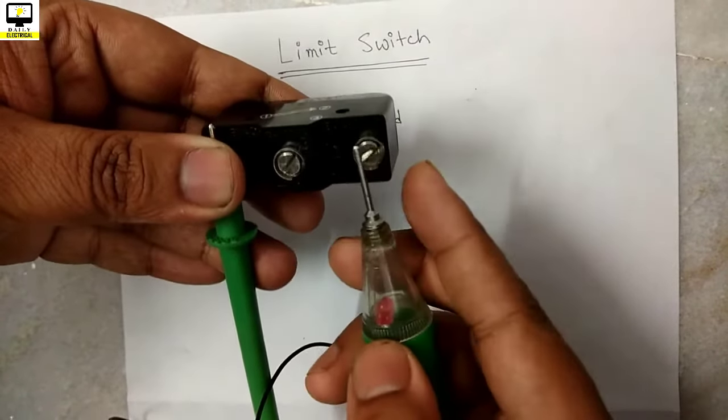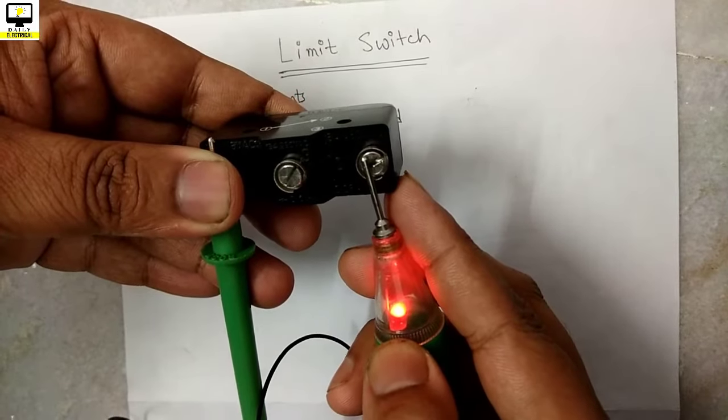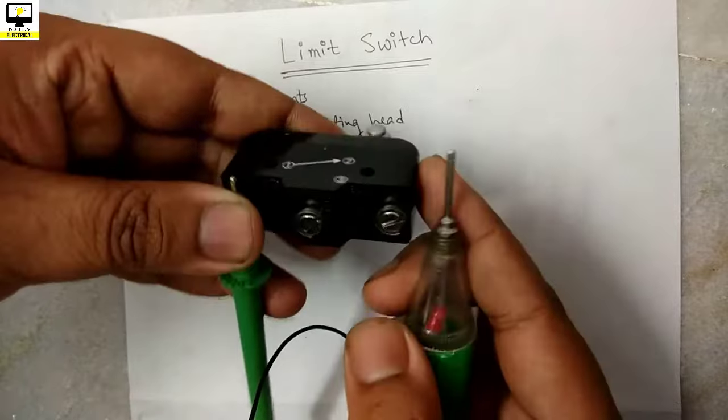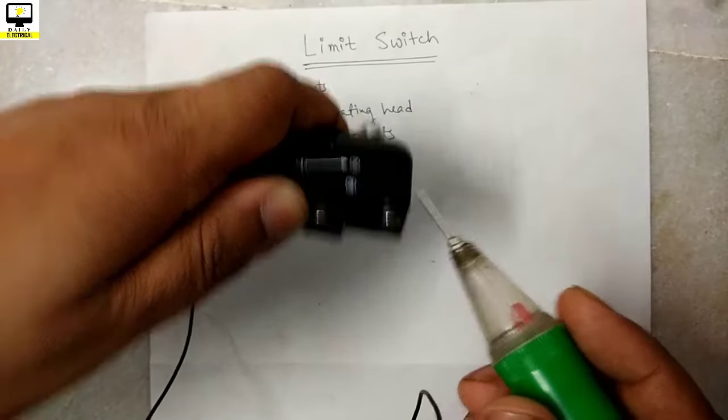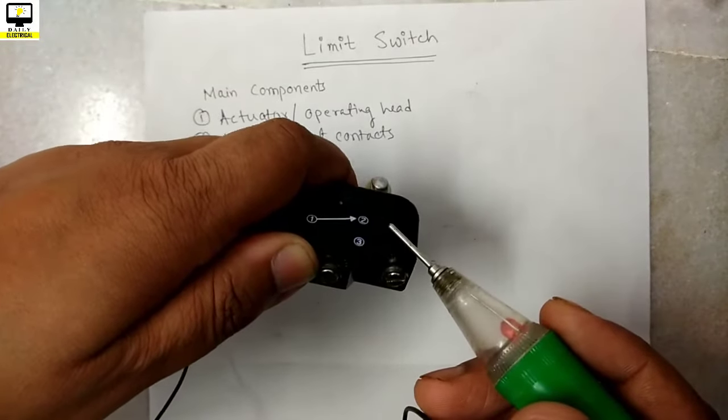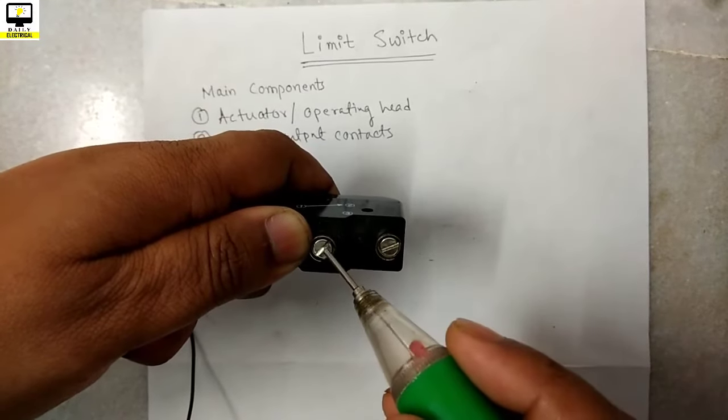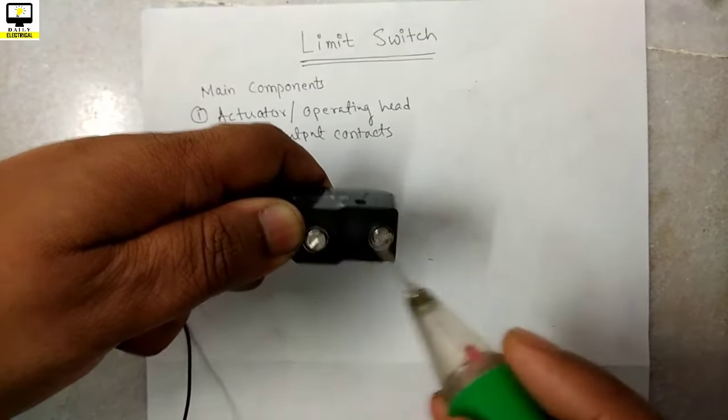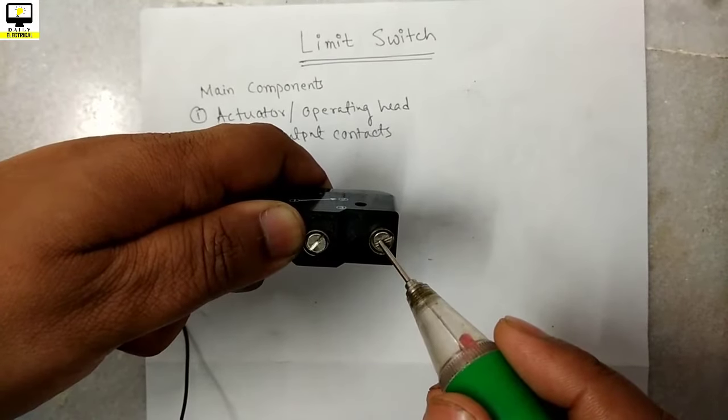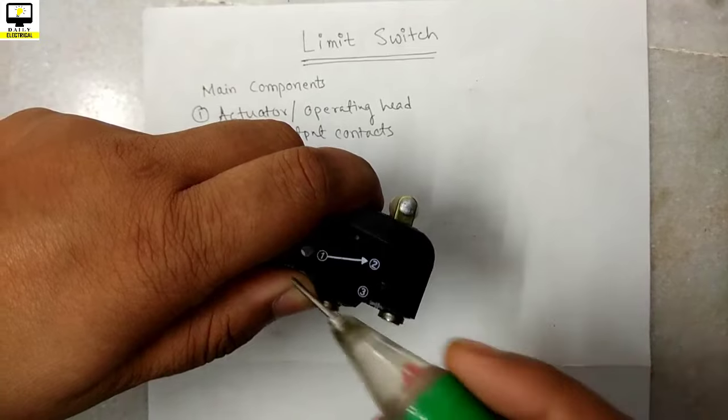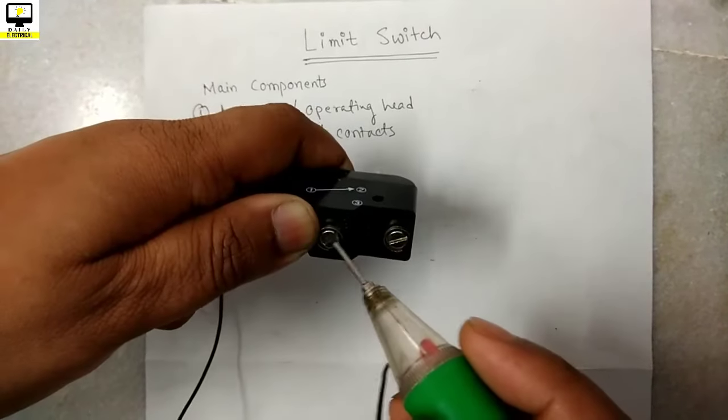But when the mechanical pressure switch, that means the actuator is pressed, then the connection just shifts to 1 and 3, and now 2 is disconnected. That means now the limit switch is in activate position and common and normally open contact is connected.